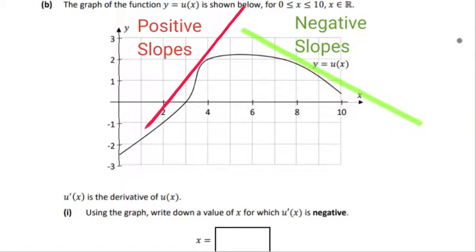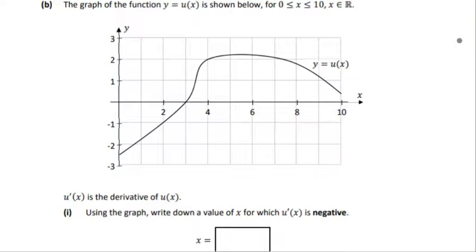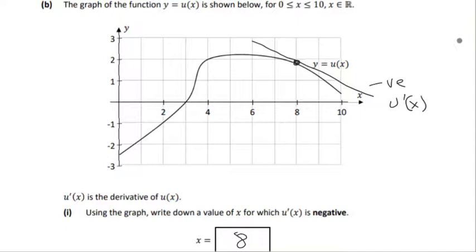We can choose any value past the peak of the graph — any point where it's going downward from the top. Let's choose 8, as it's well over on the right. You can see there that is a negative slope, so it's a valid negative u dash of x. A lot of repetition here but it's good — we can see clearly what we're doing.